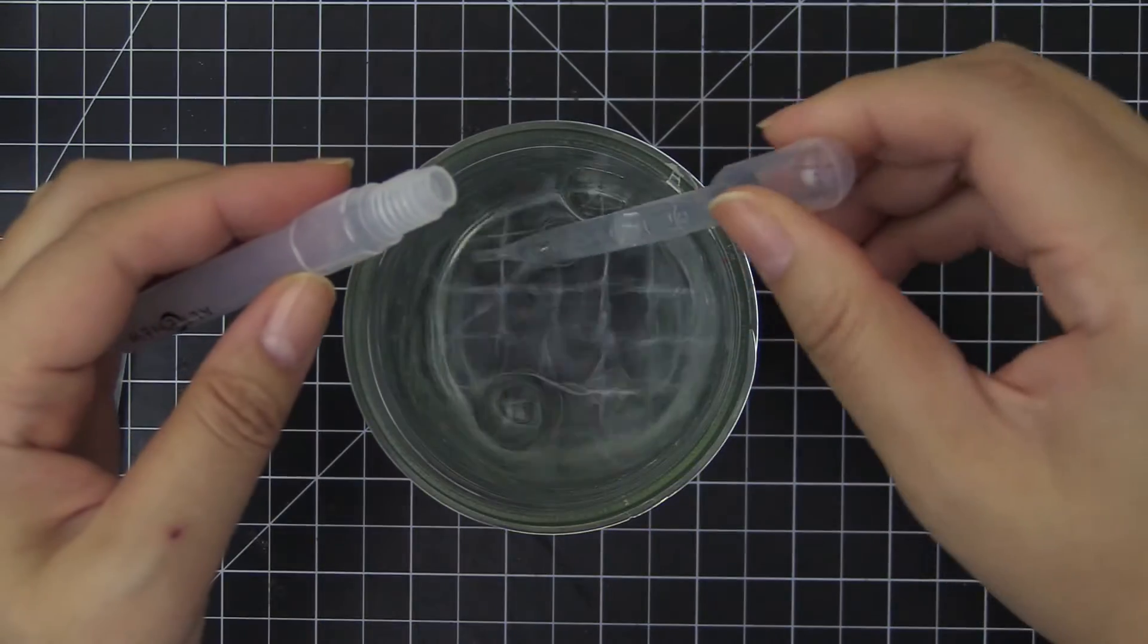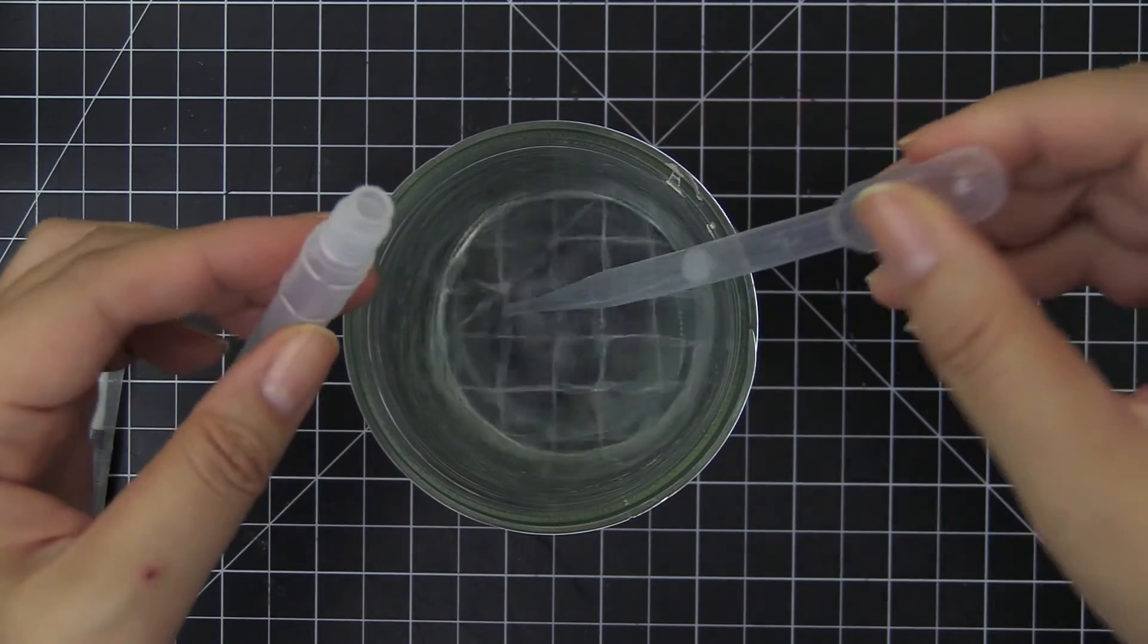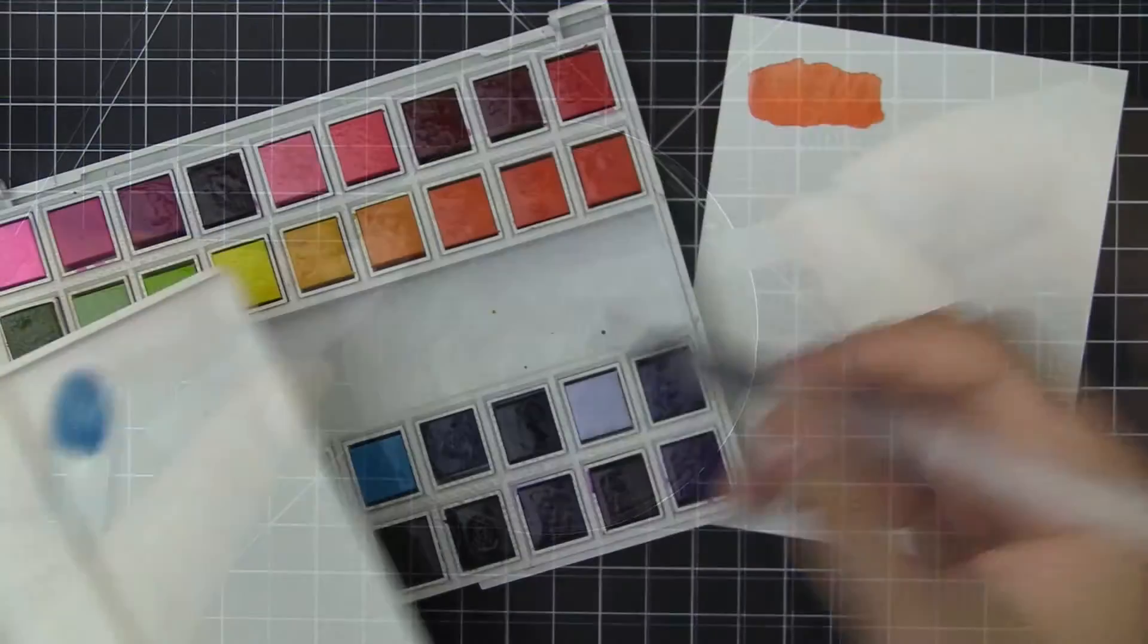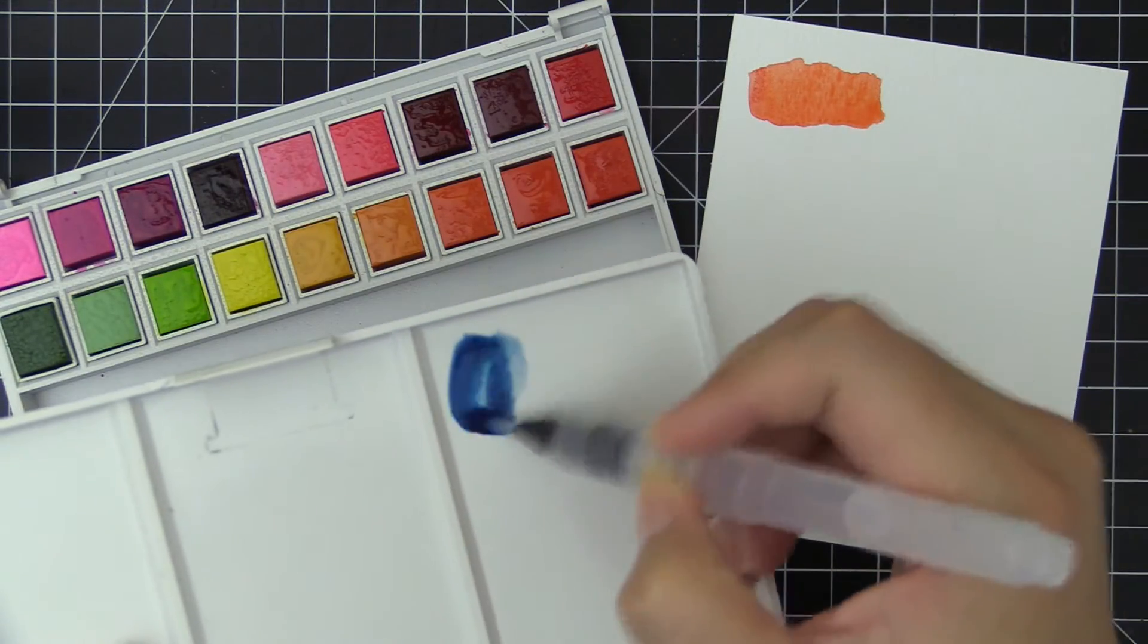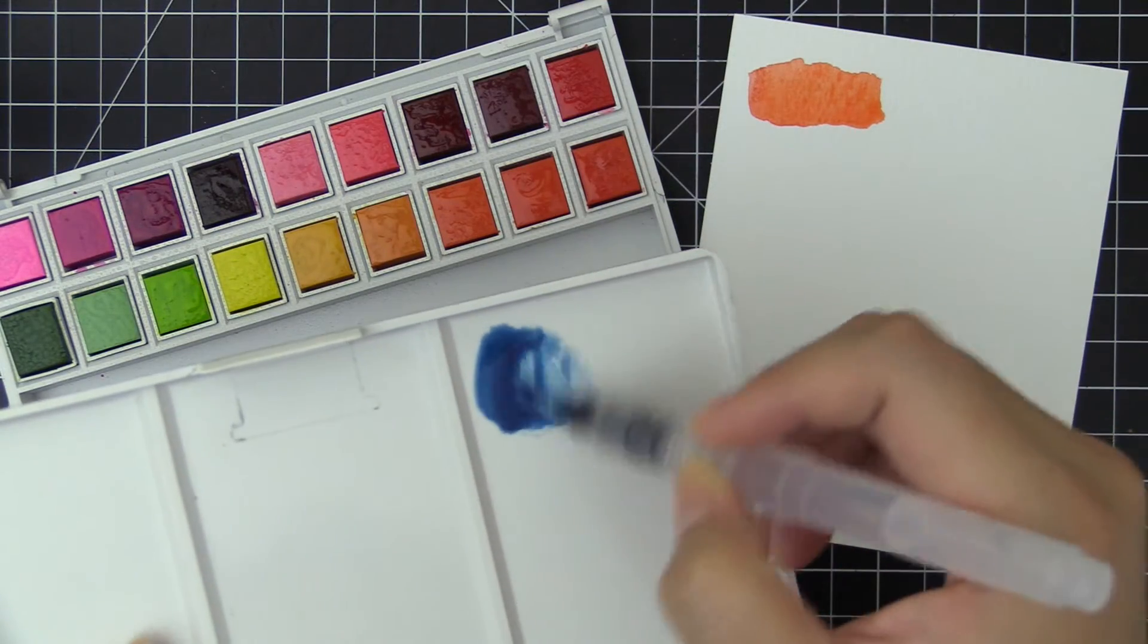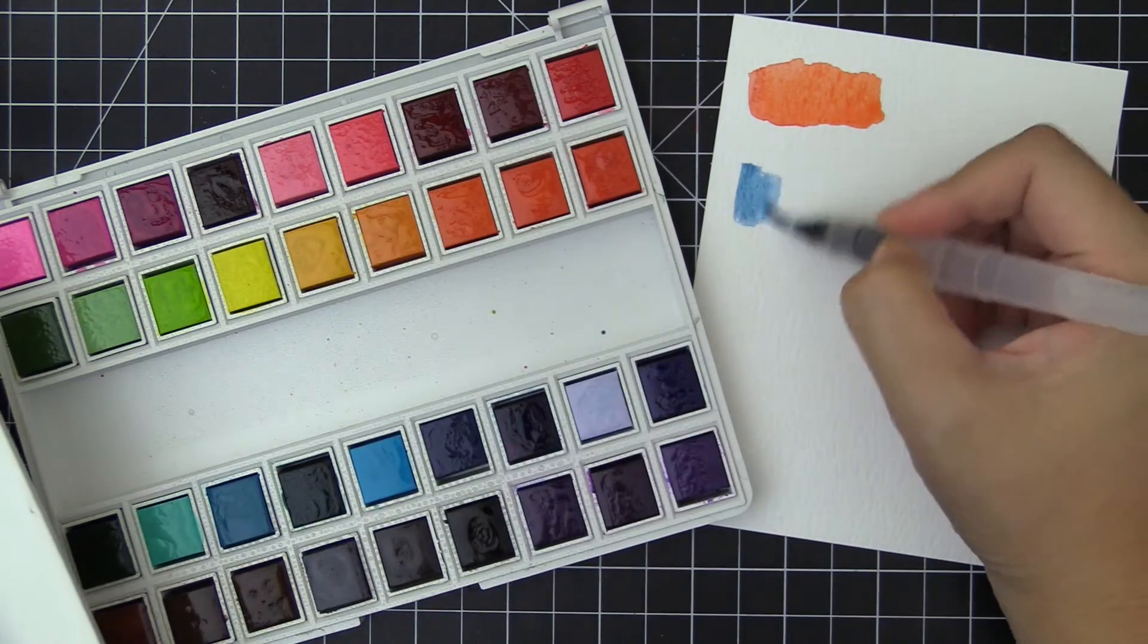Simply squeeze the brush to allow the water to flow before picking up pigments. After each color, wash it with clean water or rub it on a clean cloth to keep the brush clean or to pick up the next pigment.